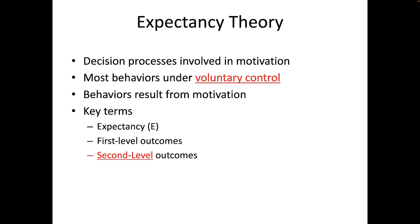Second-level outcomes are the terminal goal or terminal value that we truly desire — such as a promotion, a merit-pay increase, or acceptance by the group. Instrumentality is the perception that first-level outcomes are associated with second-level outcomes — essentially, how likely is it that a first-level outcome will lead to the second-level outcome. Valence is the preference by the individual for certain outcomes, reflecting the value we place on both first-level and second-level outcomes. We value some outcomes more than others, and second-level outcomes more than any first-level outcomes. This will be easier to understand if we look at a diagram.